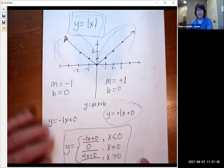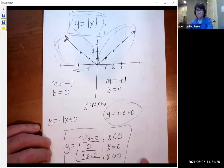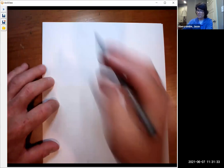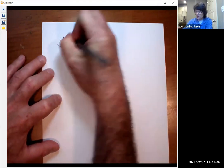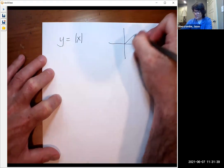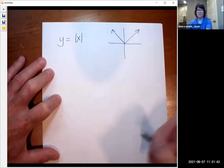If you have an absolute value function, just like any other kind of function, you can translate it all over the graph. So let's kind of look at that. I just showed you that if you have y equals the absolute value of x, it looks kind of like this, just a V shape with the vertex at zero, zero.